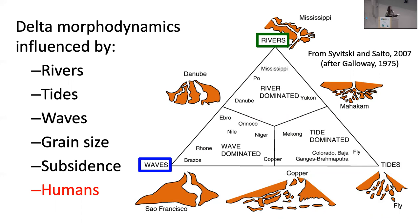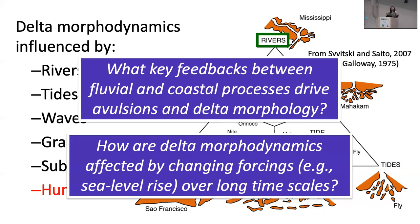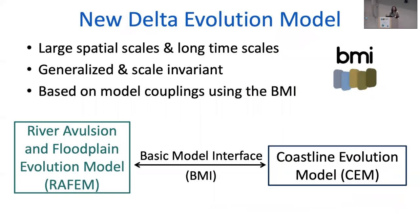That's a particularly important question over large space and time scales. As we think back to the Mississippi, we're talking about thousands of years of evolution and really large spatial scales. The key questions I sought to address are: what are the feedbacks between fluvial and coastal processes that drive morphology and avulsion behavior, and how are these morphodynamics affected over large space and time scales? Because these things happen over long periods of time, we would expect sea level to change, so we need to understand how these things interact with changing forcings in the future. No previous delta model seemed fit to address these questions over these large space and time scales.